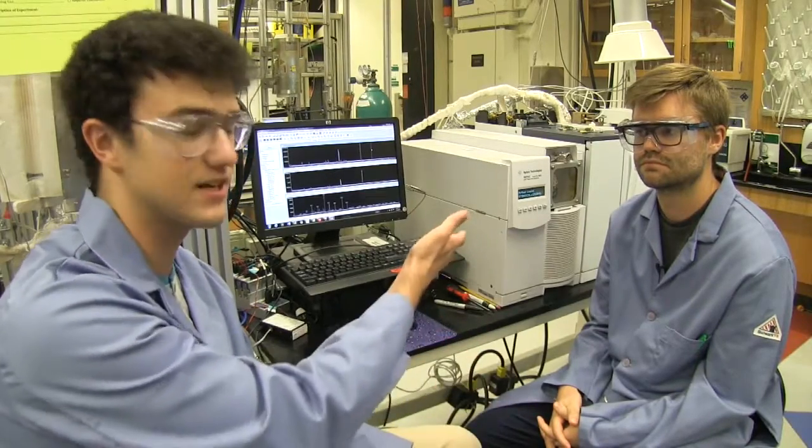So once we're done with the reaction, we'll take a sample and we'll put it on this machine here called a gas chromatograph with mass spectrometer. The gas chromatograph tells us how much products we made and can separate them. And then the mass spectrometer tells us what each of those products is so we can see if the reaction is creating the compounds we wanted to create.